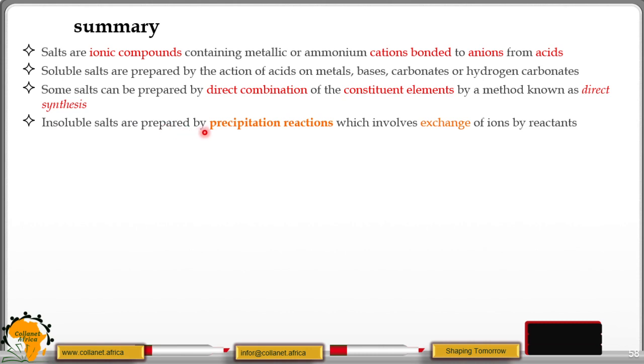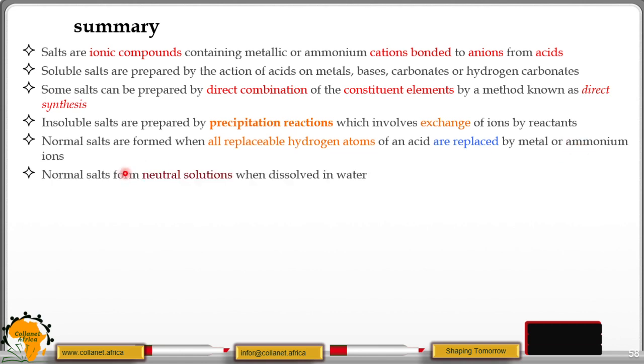Insoluble salts are prepared by precipitation reaction which involves exchange of ions by reactants. Normal salts are formed when all replaceable hydrogen atoms of an acid are replaced by metal or ammonium ions. Normal salts form neutral solutions when dissolved in water.